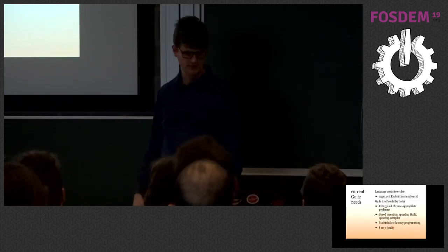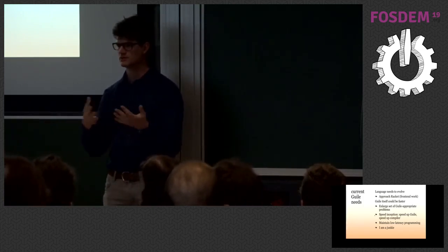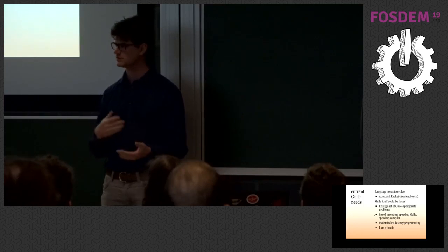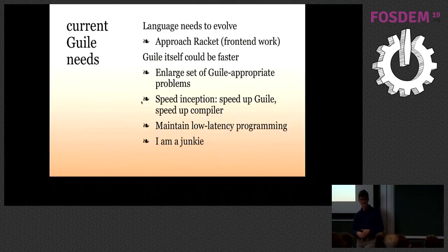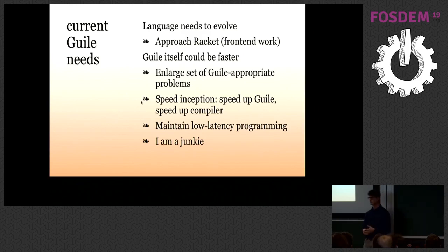Thinking about where GUILE 2.2 needs to go: the language itself needs some evolving — we haven't really changed the language GUILE implements in a long time, and we need to approach Racket somehow. That's mostly front-end work. On the back end, GUILE itself could be faster, and more kinds of programs could be written in GUILE if it were faster. GUILE's compiler is written in GUILE itself, so speeding up GUILE speeds up all compilation — including the long waits users experience during Guix pulls.